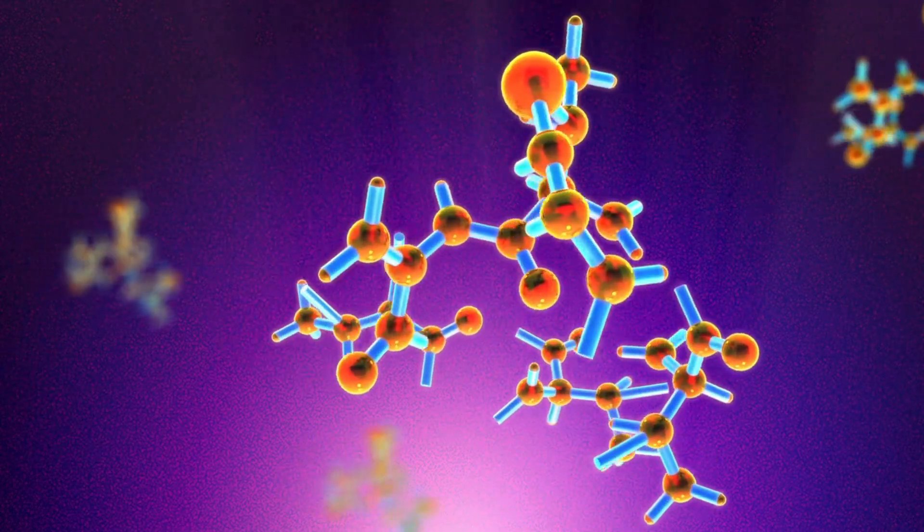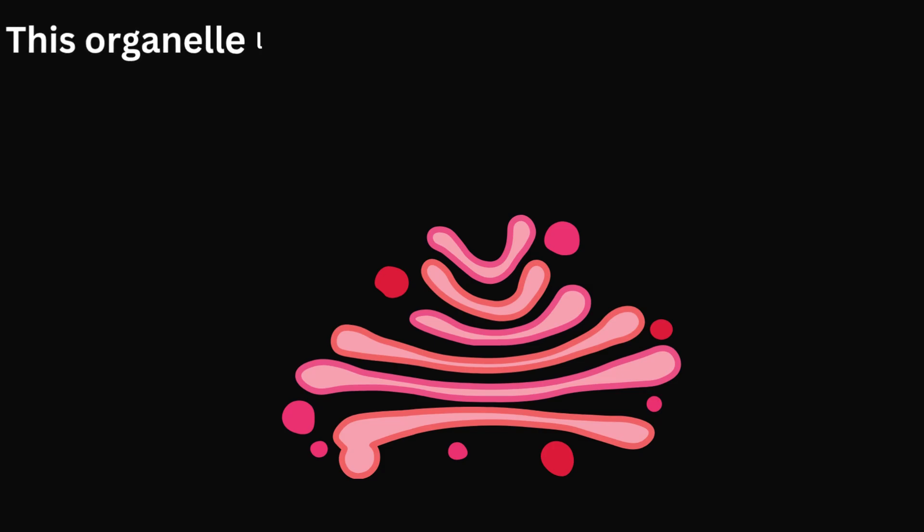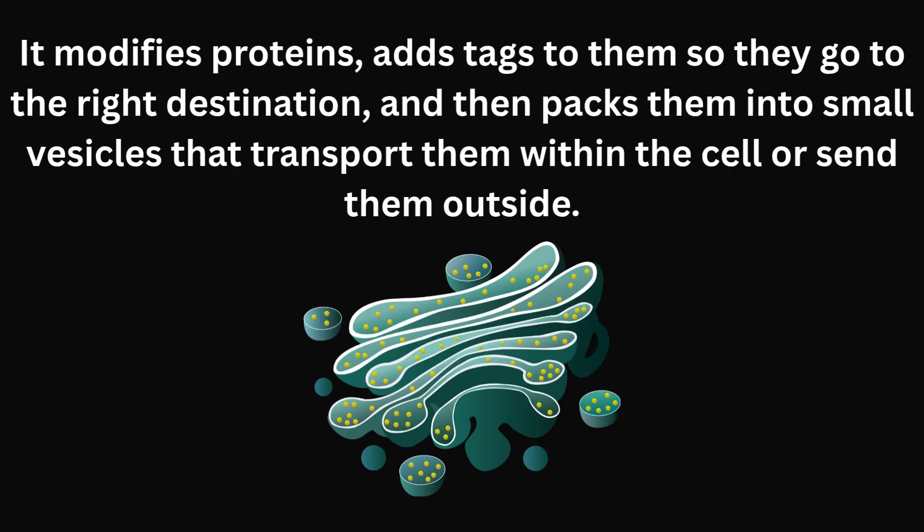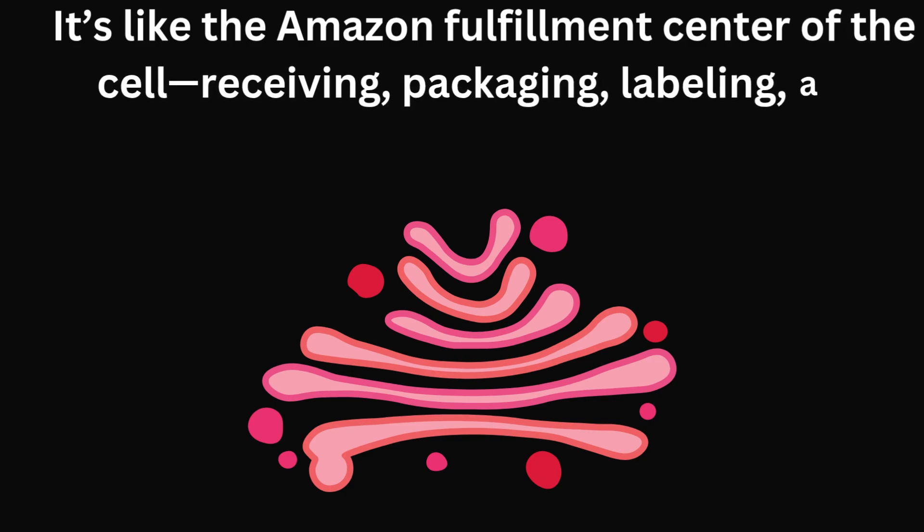Once the proteins are made, they're not just left lying around. They need to be packaged, labelled, and shipped to the right place. That's where the Golgi apparatus comes in. This organelle looks like a stack of pancakes or folded ribbons and acts like the cell's post office or packaging centre. It modifies proteins, adds tags to them so they go to the right destination, and then packs them into small vesicles that transport them within the cell or send them outside. It's kind of like the Amazon fulfilment centre of the cell, receiving, packaging, labelling and shipping 24-7.